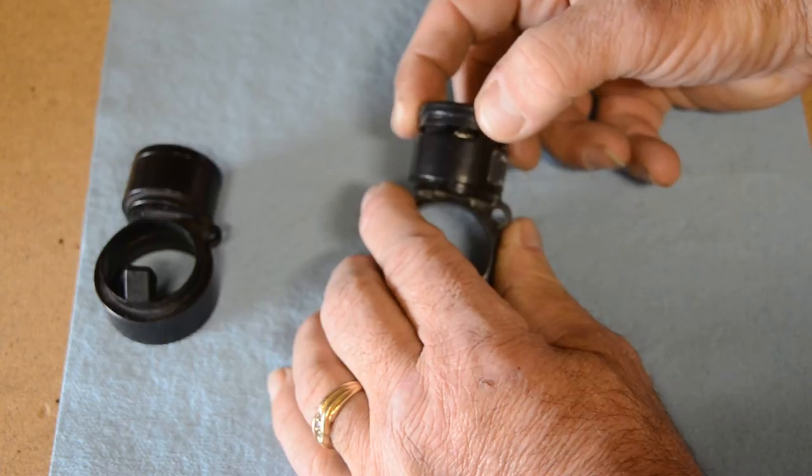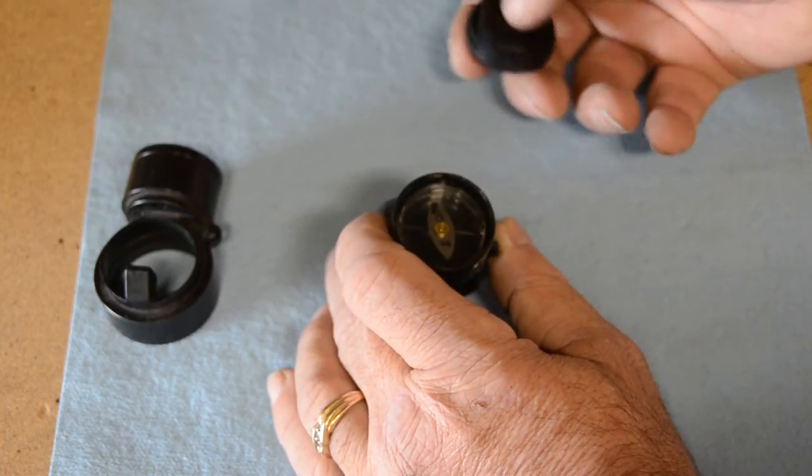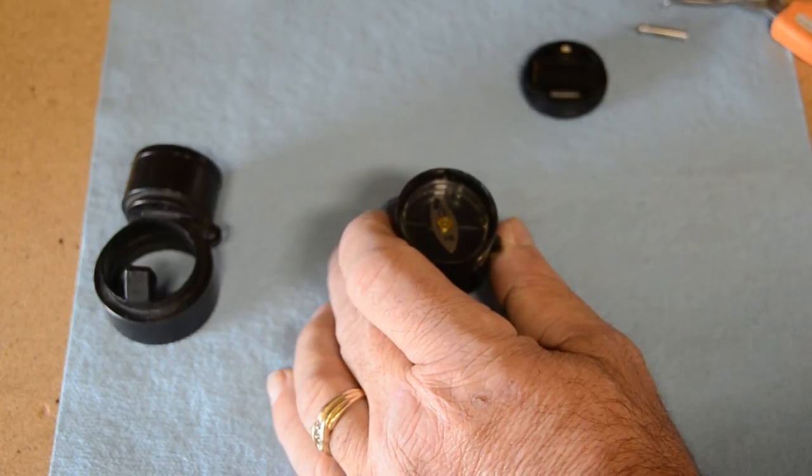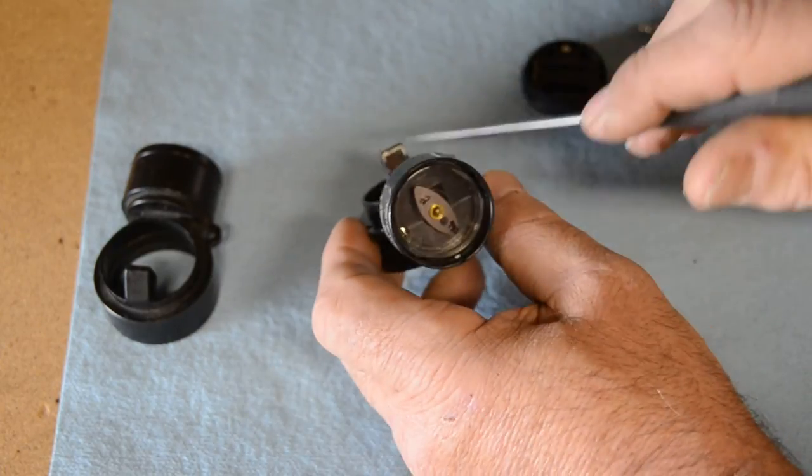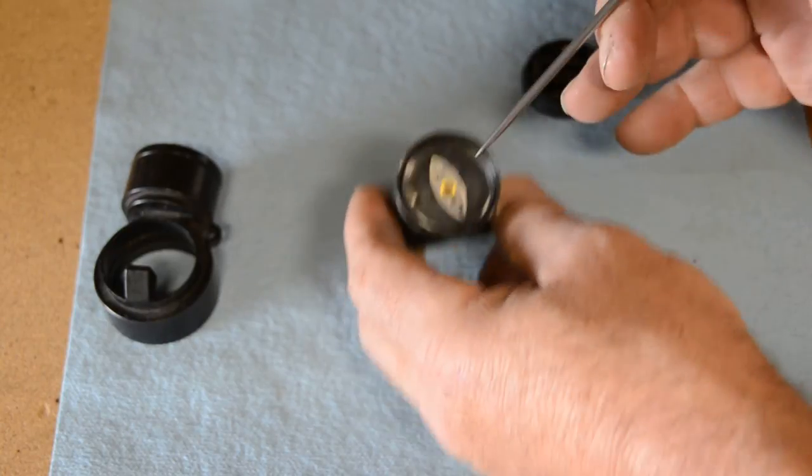You can see it'll break loose. You pull it out, put this aside for the moment. I'll explain a couple of things on that mirror lens assembly that was on the top of it. You can see the magnetic compass.